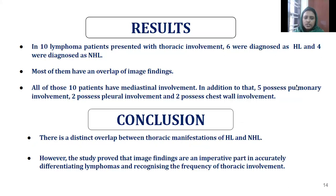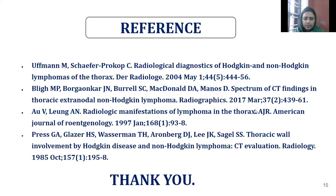In 10 lymphoma patients who presented with thoracic involvement, 6 were diagnosed as HL and 4 were diagnosed as NHL. Most of them had an overlap of imaging findings, and all 10 patients had mediastinal involvement. In addition, 5 had pulmonary involvement, 2 had pleural involvement, and 2 had chest wall involvement. There is a distinct overlap between thoracic manifestations of HL and NHL. However, the study proved that imaging findings are an imperative part in accurately differentiating lymphomas and recognizing the frequency of thoracic involvement.